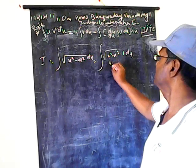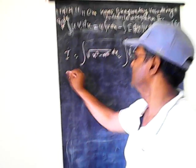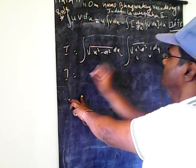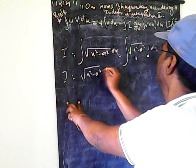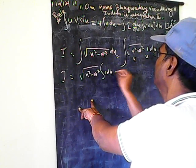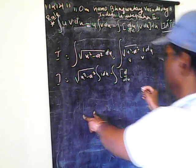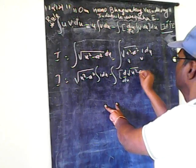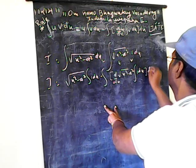Now we let this be u and this be dv. Therefore I is equal to: first we take u outside, which is under root x square minus a square, times the integration of 1 into dx, minus the integration of d by dx of under root x square minus a square, times the integration of 1 into dx, all into dx.